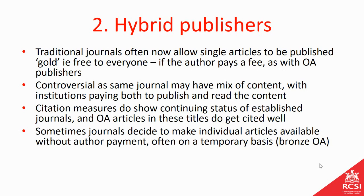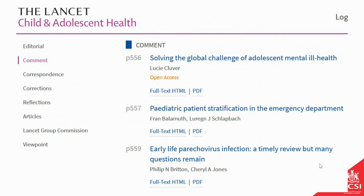It's worth noting that paying for open access really does mean more people read it and more people cite it, so your metrics may well go up. Sometimes individual articles — the journal may decide to make available for a limited time, either because it's an important popular topic or to encourage people to subscribe. This is sometimes called bronze open access. Here's an example from the Lancet Child and Adolescent Health journal — you'll see a list of articles and the top one is labeled in orange as open access, while the others require login to get into the full text.